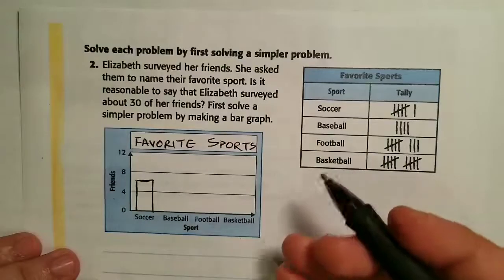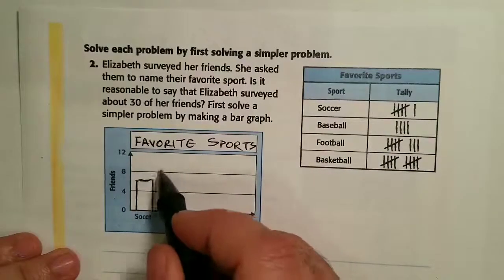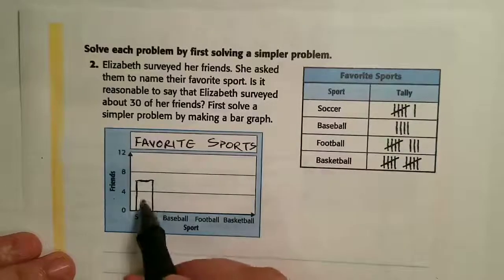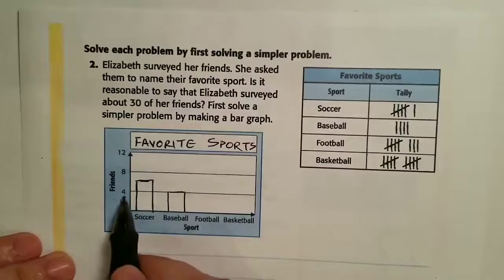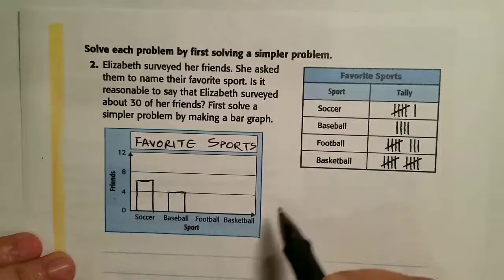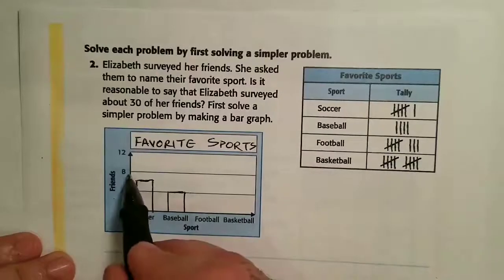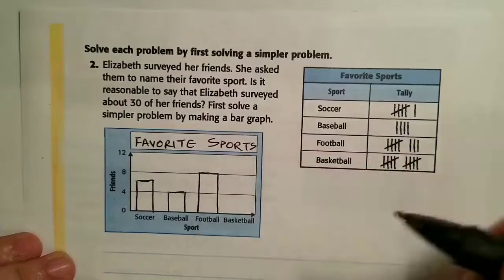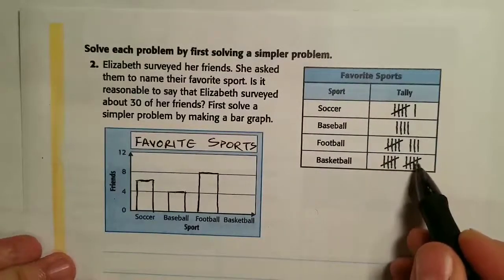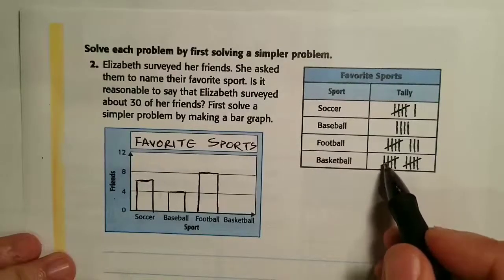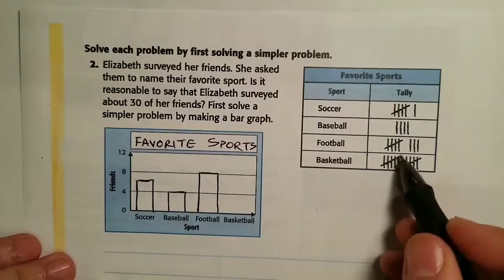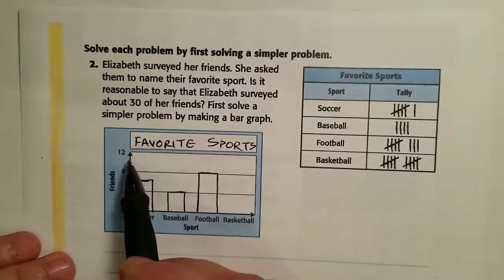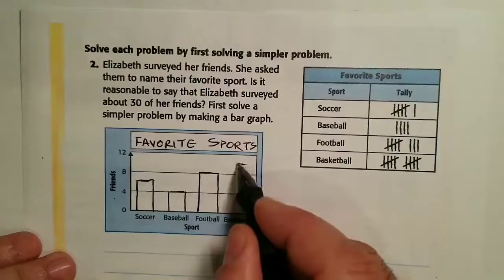You can make the bars as wide as you want. Baseball has one, two, three, four — it's going to end right at the four line. Football is five, six, seven, eight — the football bar goes all the way up to eight. Basketball is five and ten. That's how tallies work — after the fourth mark, the fifth does a cross, so I can count quickly. Ten is between eight and twelve, right in the middle.